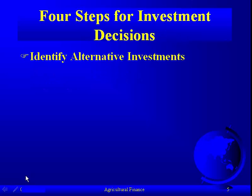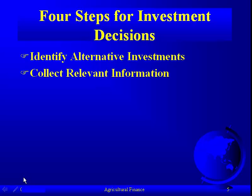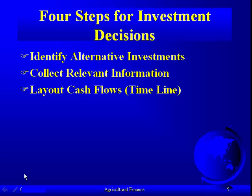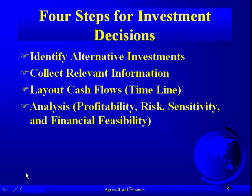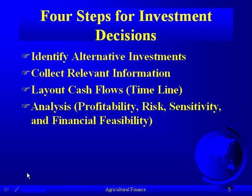There are four steps in the investment decisions. First is to identify the alternative investments — we have to know what's out there to appropriately identify the best. The second is to collect relevant information. The third is to lay out the cash flows and the timeline. The fourth is the analysis, which covers profitability — the net present value and the internal rate of return — and later, risk and sensitivity, because the net present value by itself isn't all that meaningful.